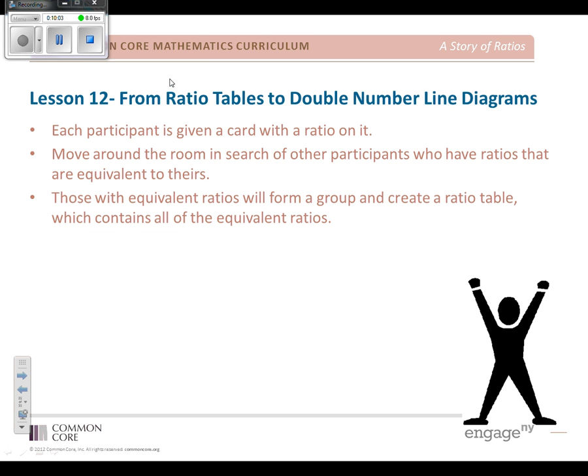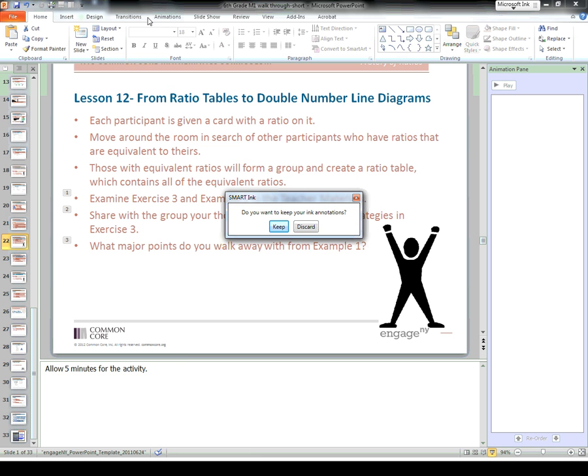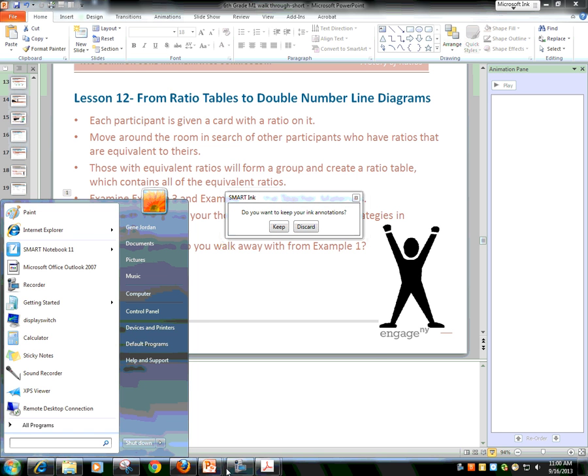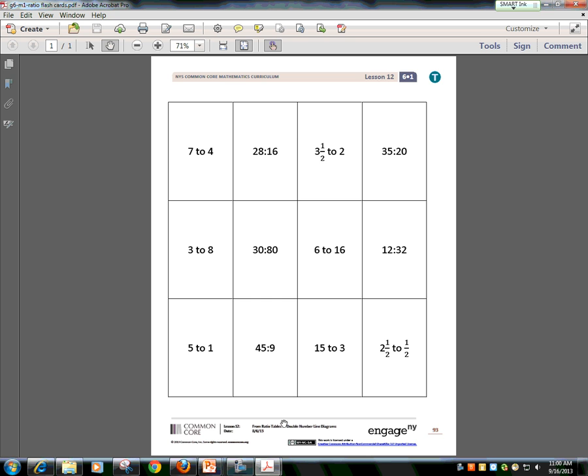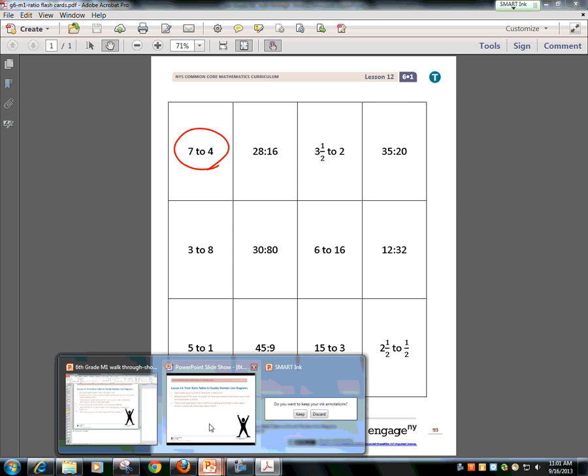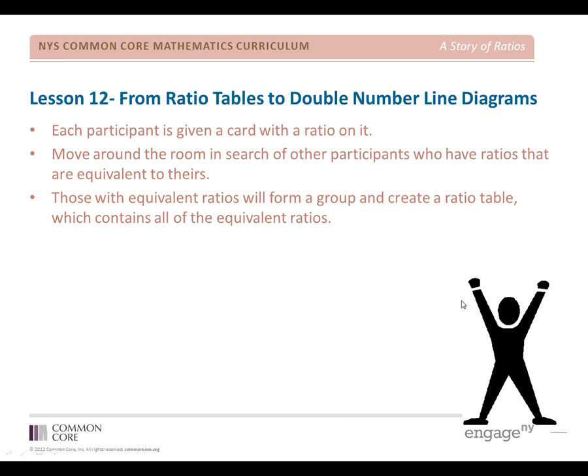We're going to move on to Lesson 12. This is sort of interesting because they're giving a card with a ratio on it, and then they're going to move around the room in search of other participants. Make sure you recognize within these lessons—that's what it looks like. You have a card, and all the kids get one. And there's actually three sheets. You want to make sure you print those off as a student reproducible, and cut them off and hand them out to the kids, and they will find their partners who have equivalent ratios.